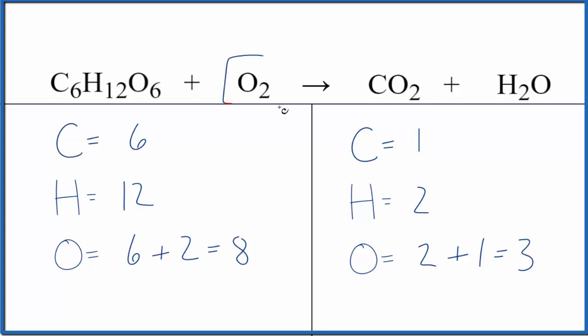Let's leave the oxygen until last. That's a very good strategy with combustion reactions. Start with the carbons. Put a 6 in front of the CO2. 1 times 6 gives us 6 of those so the carbons are balanced.